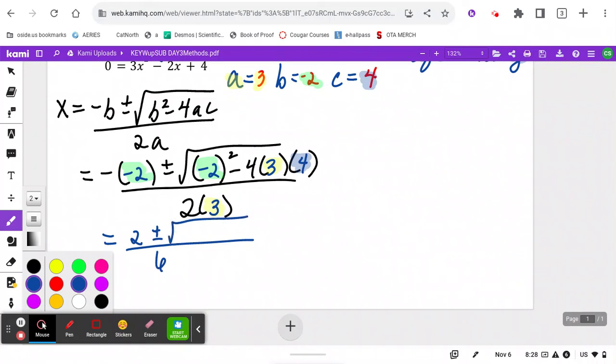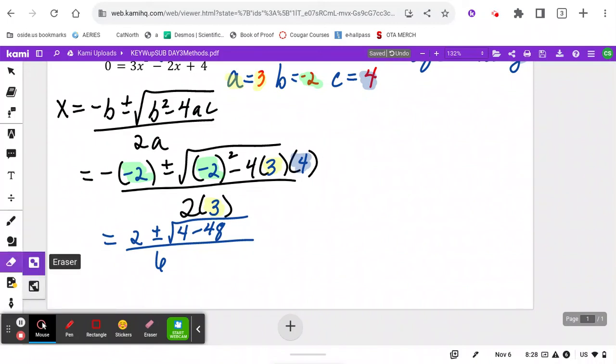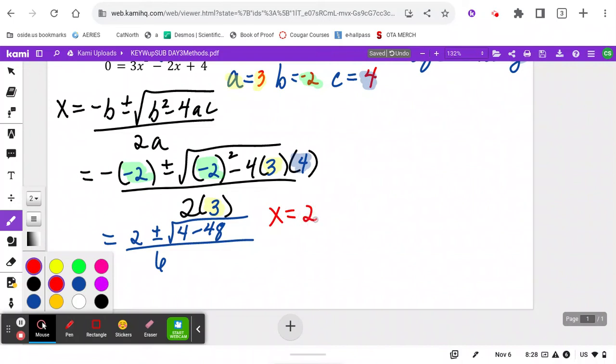Underneath this radical is called the discriminant. This part is where a lot of errors are made, so go slow. What's negative 2 squared? Did you get positive 4? Minus 4 times 3 times 4, that's 12 times 4 is 48. So my final answer here is going to be, oops, I got to leave space for the steps.